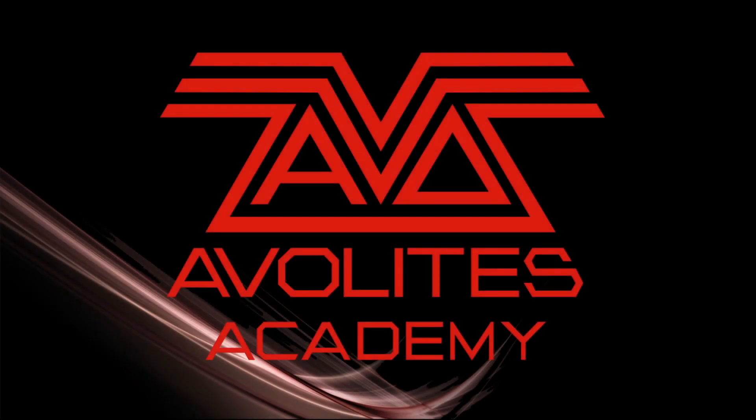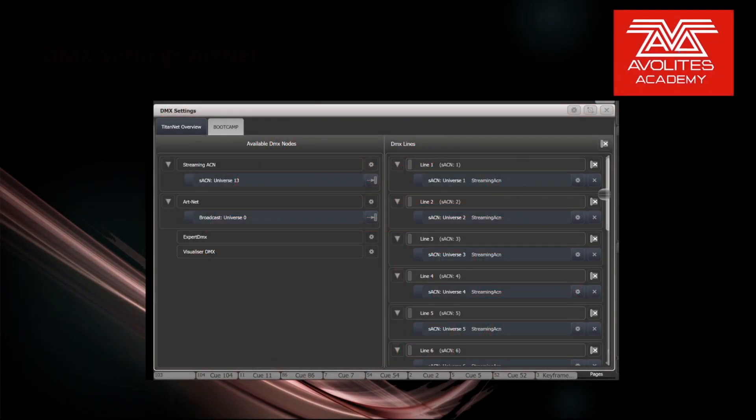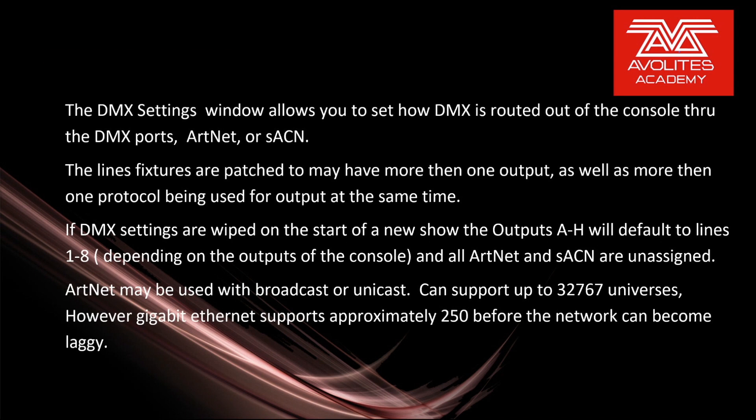Hey everybody and welcome to Mission Control for another feature focus video. In this video we're going to discuss DMX settings and Artnet. The DMX settings window allows you to set how DMX is routed out of the console through the DMX ports, Artnet, or Streaming ACN. The lines fixtures are patched to may have more than one output, as well as more than one protocol being used for output at the same time.